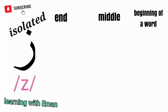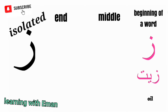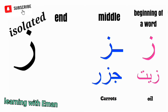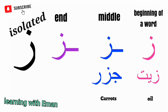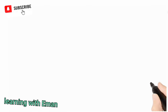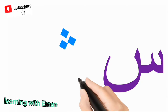Zain sounds like the letter Z in English. At the beginning of a word, like in a word meaning oil. At the middle of a word, like in a word meaning carrots. At the end of a word, like in a word meaning mystery.